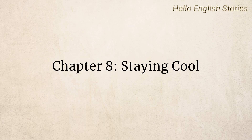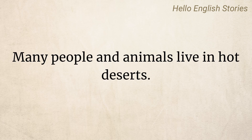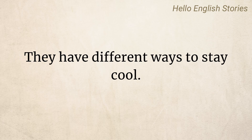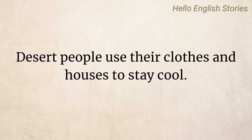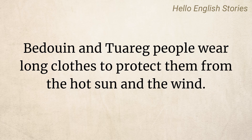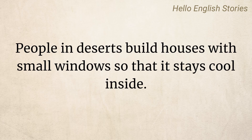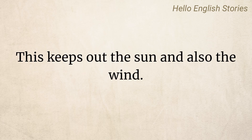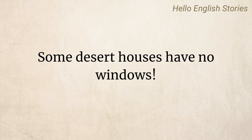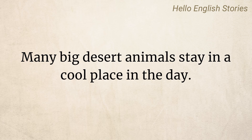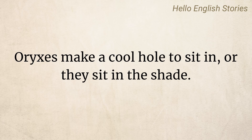Chapter 8: Staying Cool. Many people and animals live in hot deserts. They have different ways to stay cool. Desert people use their clothes and houses to stay cool. Bedouin and Tuareg people wear long clothes to protect them from the hot sun and the wind. They wear a head cloth to protect their head and face. People in deserts build houses with small windows so that it stays cool inside. This keeps out the sun and also the wind. Some desert houses have no windows.